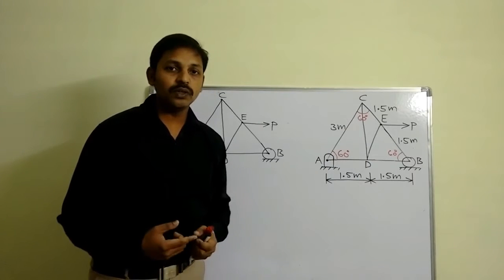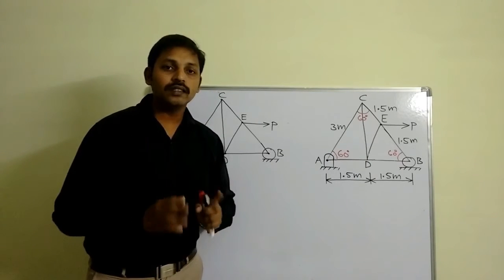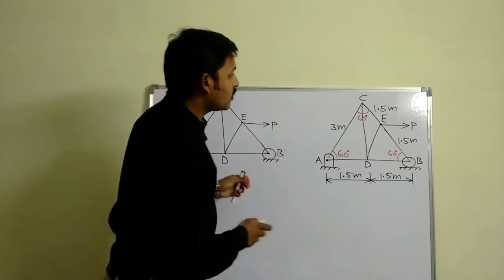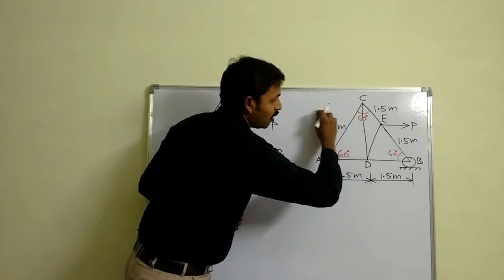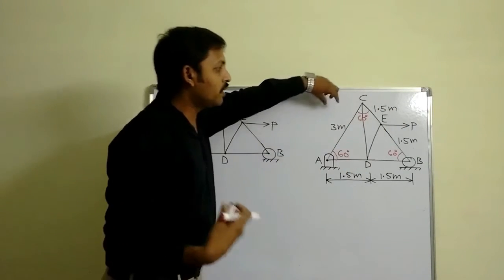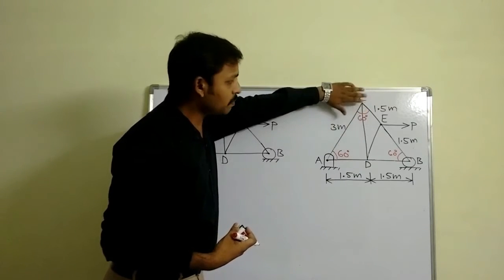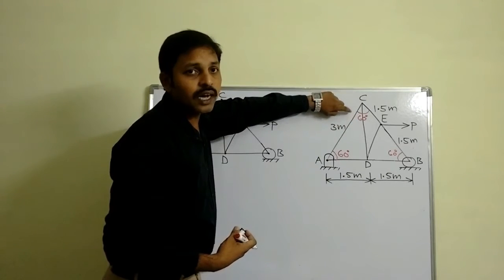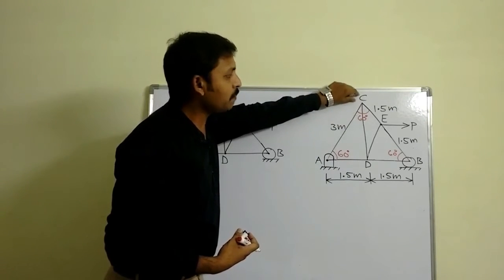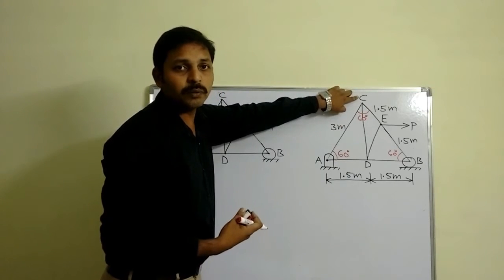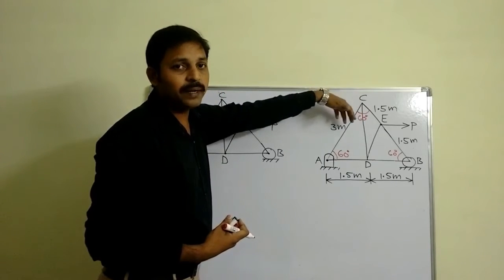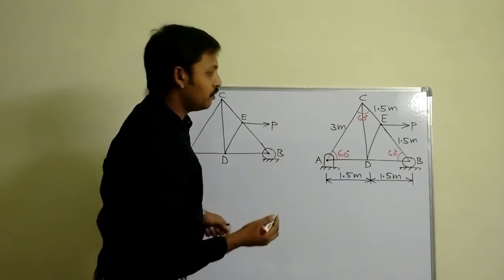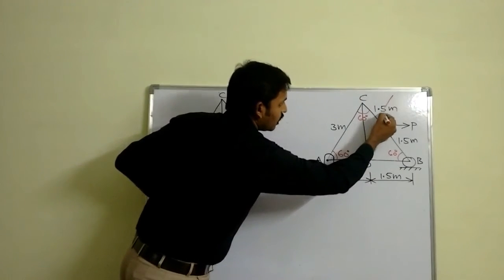In Method of Sections, what I need to do is draw a section line that should intersect only three members. If I draw a horizontal section line, all the forces would pass through common point C. When I take C as the moment center, I will eliminate all the forces — so a horizontal section line is not useful. For that reason, I am taking an inclined section line like this.